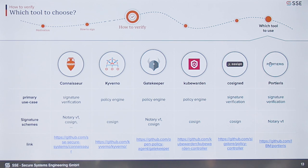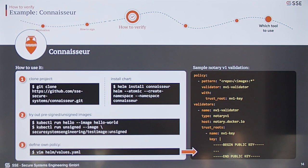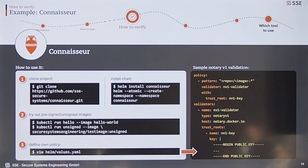I'm going to talk about Connoisseur since me and my colleagues are actually maintainers of the whole project. If you want to explore Connoisseur, you can just clone the project and use our Helm chart to install it into your cluster. Then you can already start trying to run certain images and see whether Connoisseur allows them or not. We have some predefined keys in our policy, so you can already start running the Hello World image and it will allow it, since the Hello World image on Docker Hub is actually signed.